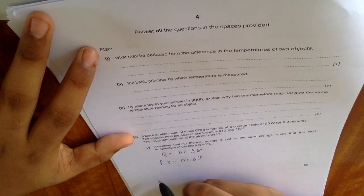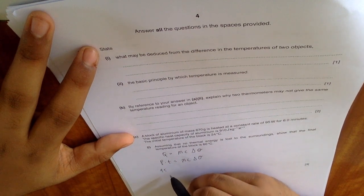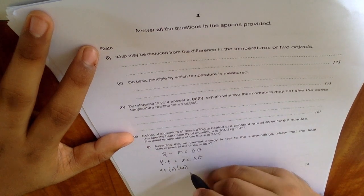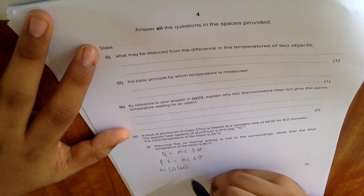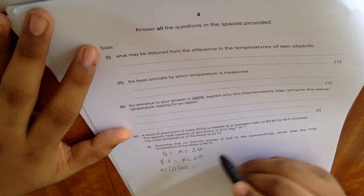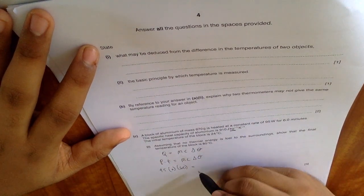So power is 95 watts, time is six minutes. Six minutes is actually six times 60 seconds, so we just multiply by 60 there. Is equal to m, it is 670 grams but in kilograms, so you have to put down 0.67.